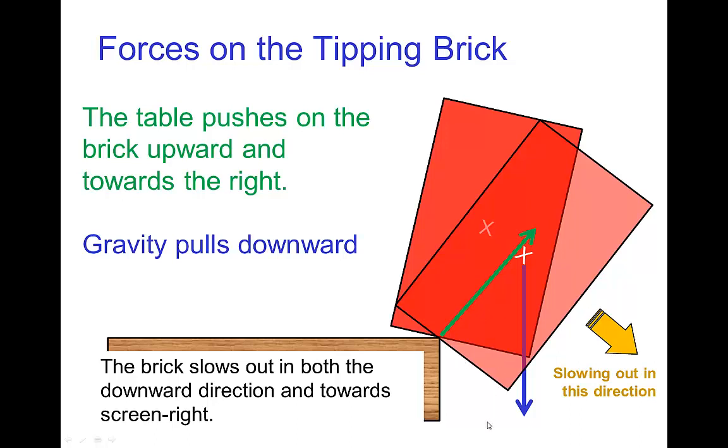The combination of these two forces result in the brick slowing out in the downward direction, but also slowing out in the horizontal direction, in this case slowing out towards screen right. The brick as it's rotating is gaining speed downward and it's gaining speed away from the table.